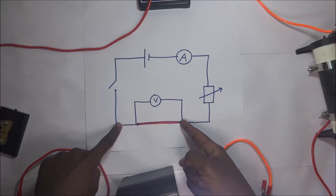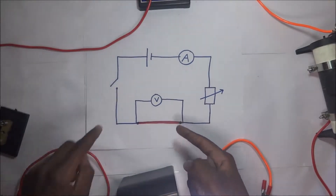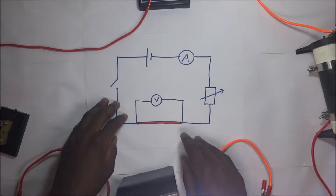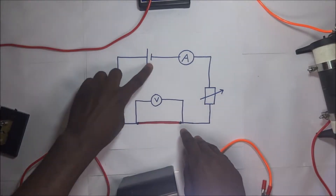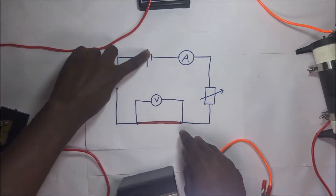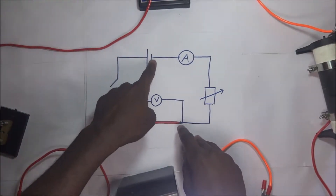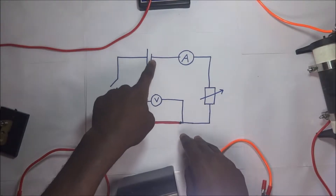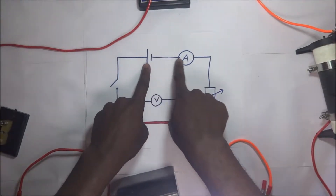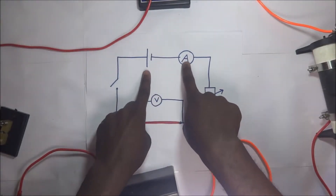This continues to a switch. This is how we are going to connect our circuit following this circuit diagram. Looking at the cell, this long end is the positive terminal and this short one is the negative terminal. So we are going to connect the negative terminal to the ammeter at this point.